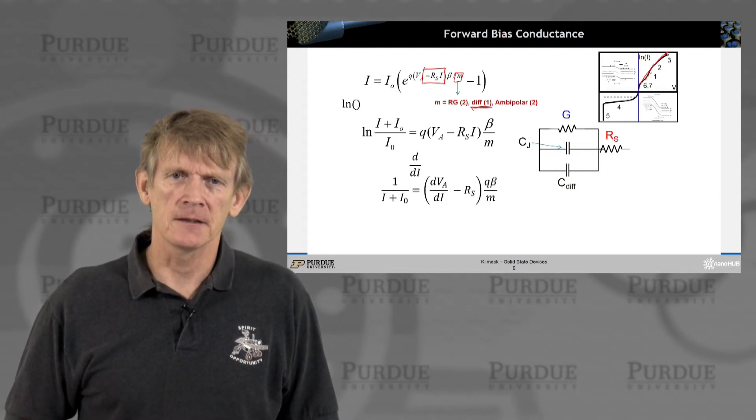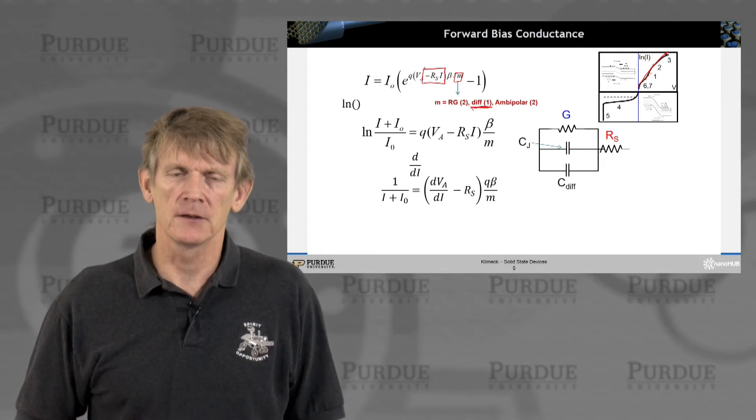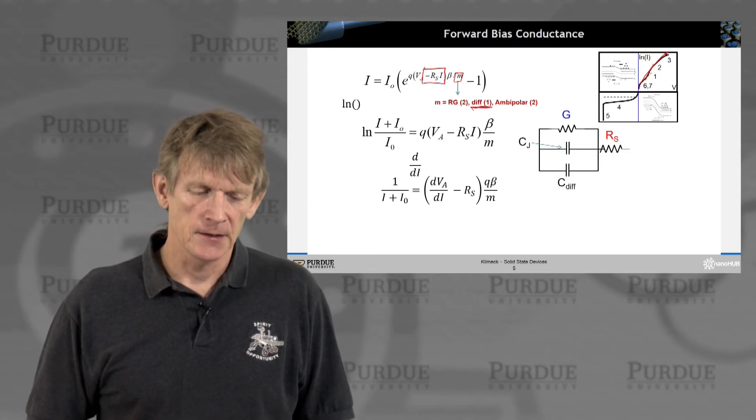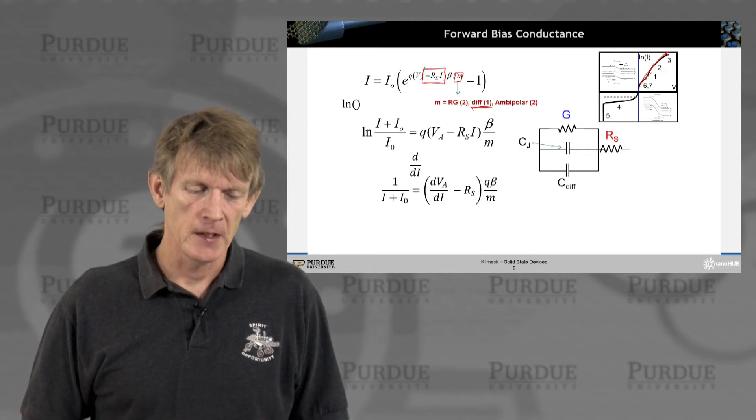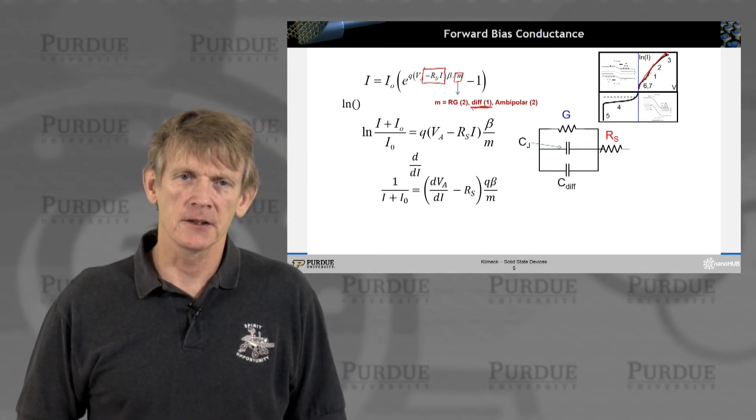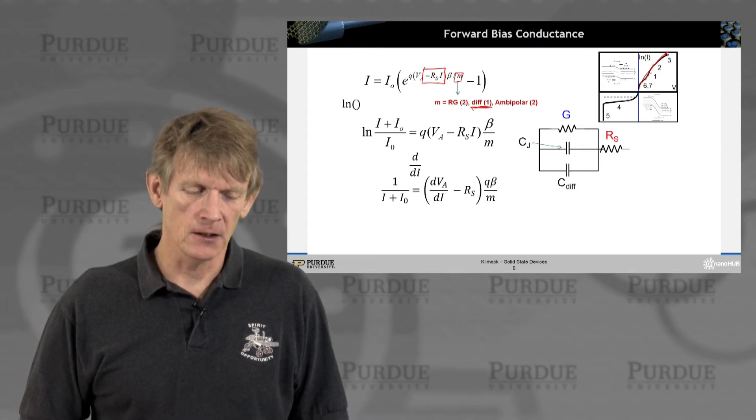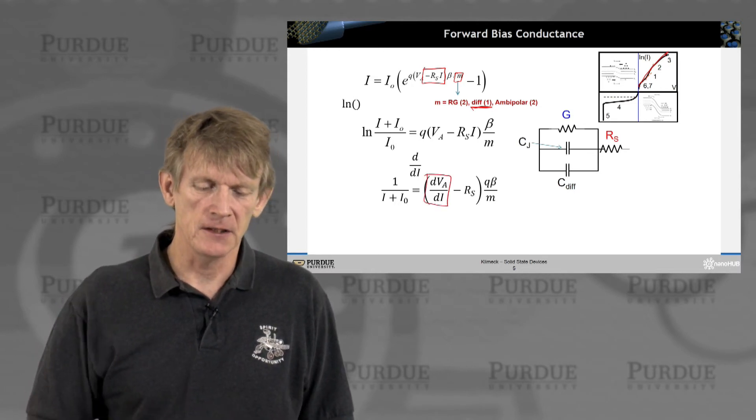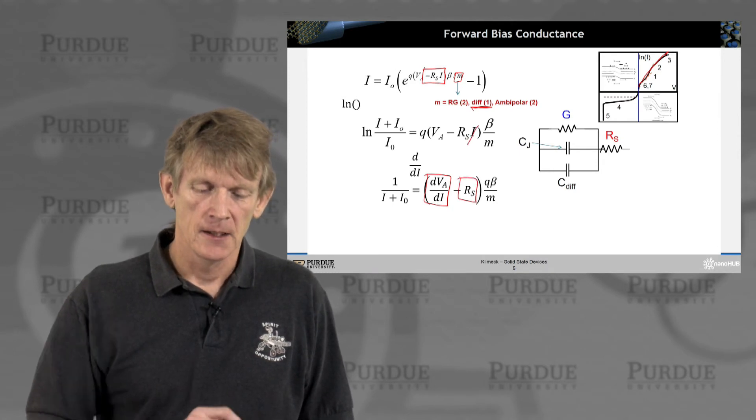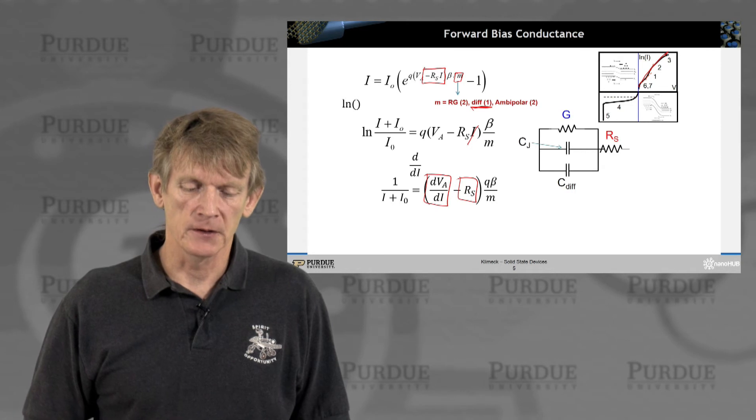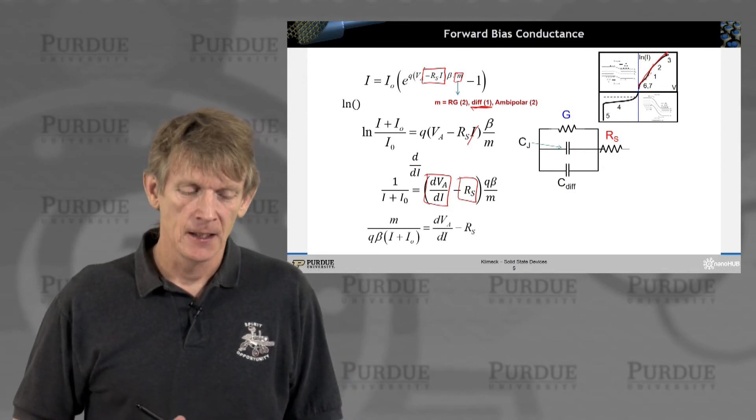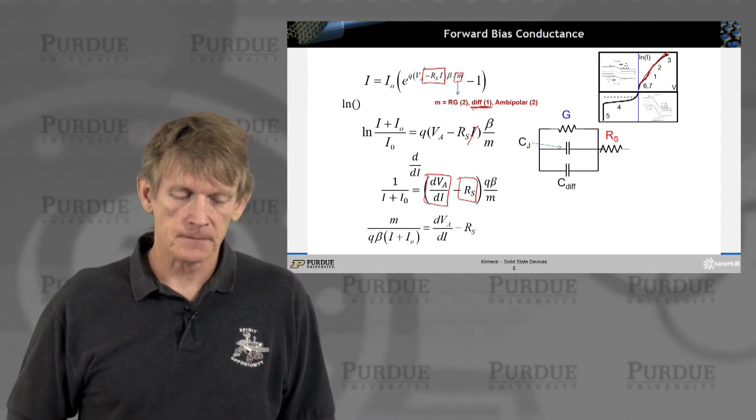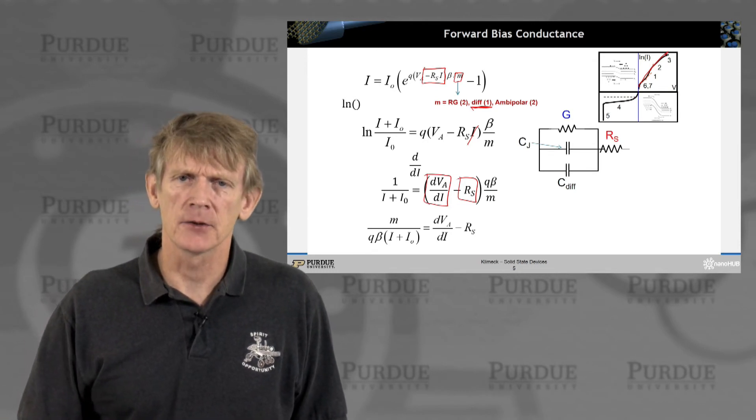We want to get differential circuit elements established. If you differentiate a log, you get one over the element inside the log. You differentiate here with I, so you get dV/dI. The I falls away. You pull down out of the exponent the beta and the m. Nothing really fancy going on here. You can resolve this expression now for one over I like this, bringing over the m and the q and the beta.